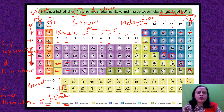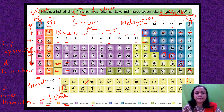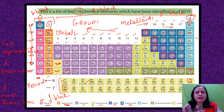The elements in purple represent the transition metals. Then in light green we have the post-transition metals, which follow the transition metals. In the next shade we have the reactive non-metals — carbon, nitrogen, oxygen, and the other elements in that color.